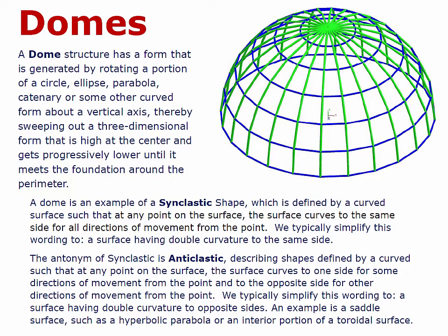A dome is an example of a synclastic shape, which is defined by a curved surface such that at any point on the surface, the surface curves to the same side for all directions of movement along the surface from that original point. We typically simplify this wording to a surface having double curvature to the same side.